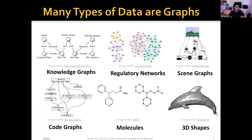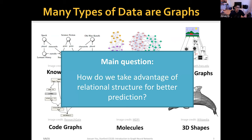Many types of data are graphs. Throughout this seminar you've seen many knowledge graph examples, but there are other real-world data that can be represented as graphs: biological regulatory networks, scene graphs, code graphs, molecules where atoms and bonds are nodes and edges, or 3D shapes defined by a mesh graph. The main question we want to ask is how do we take advantage of relational structure to help us make better predictions? We discuss this through the language of machine learning — these complex domains can be represented as relational graphs, and we can explicitly model these relationships to achieve better performance.